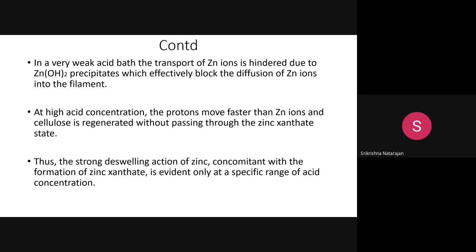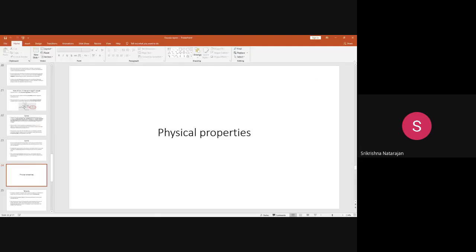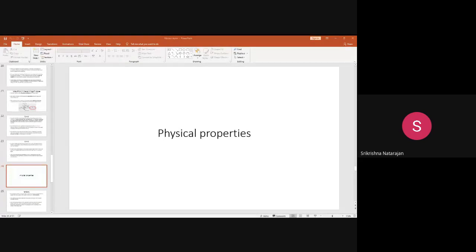After extruding the filament, additional post-spinning processes are carried out: removal of any sulfur and metals present in the viscose rayon so the final product contains only cellulose; bleaching; application of a spin finish; and winding. That is how viscose rayon is manufactured.